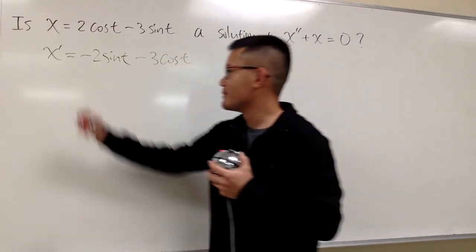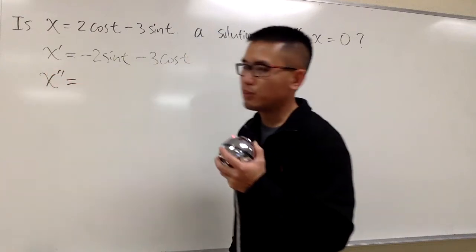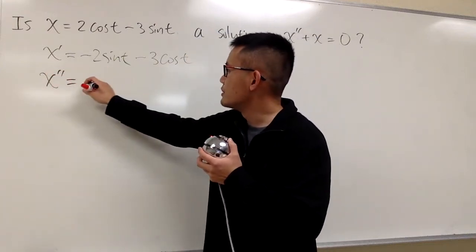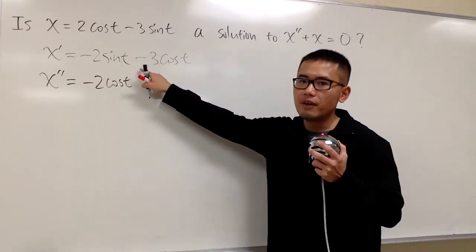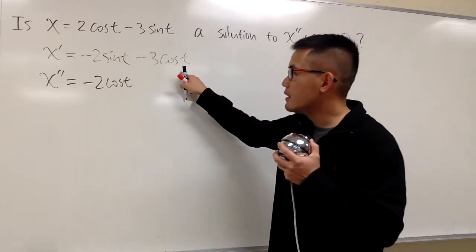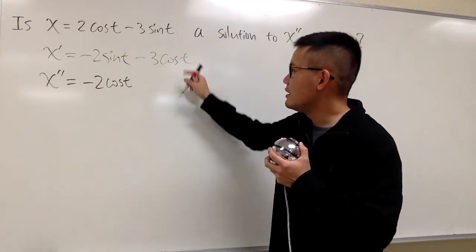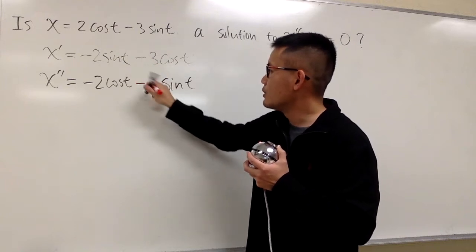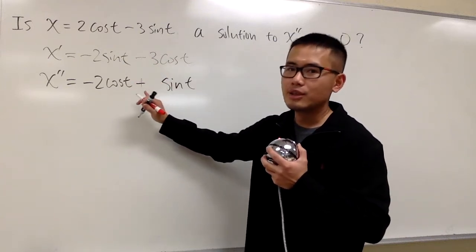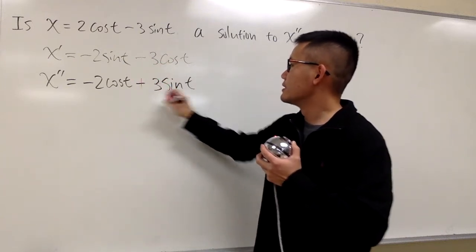And one more time, x double prime for the second derivative, this will be the derivative of this, which is negative 2 cosine t, and the derivative of negative 3 cosine t. The derivative of cosine t is negative sine t, but this was negative, right? So altogether, you are adding. So we add 3 sine t.